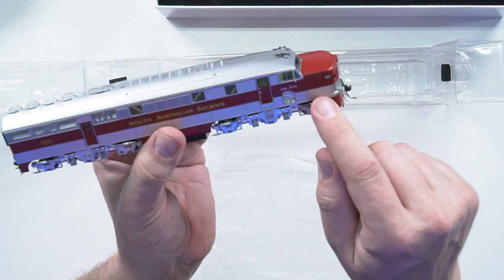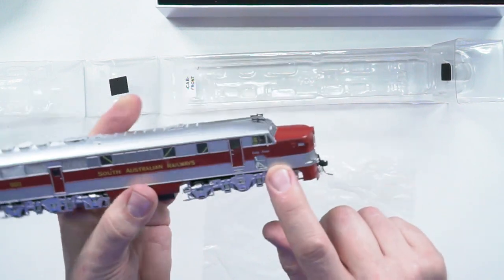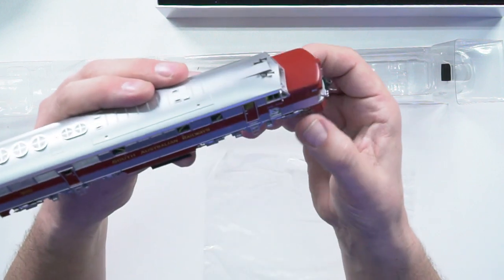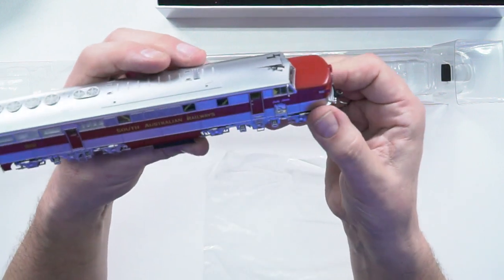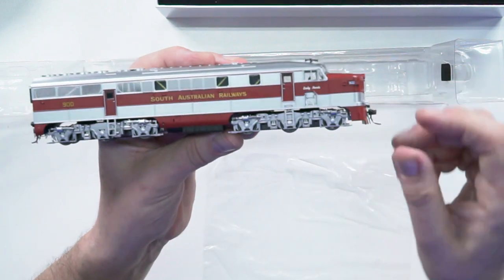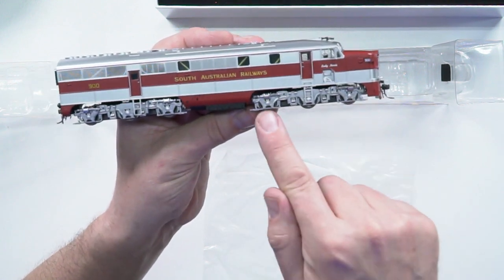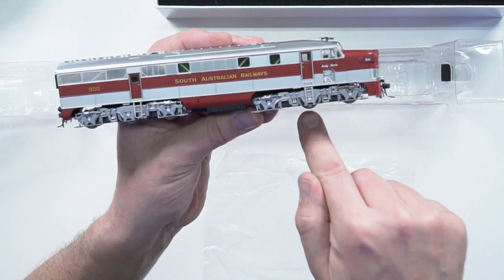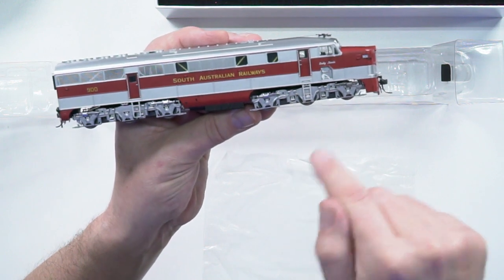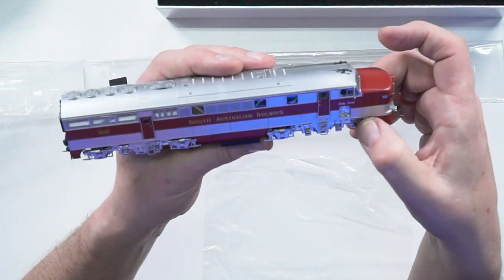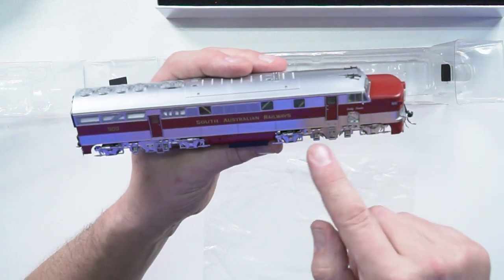We have big bulky bogeys. Now these bogeys were an A1A bogey, so anyone who's not familiar with that term, it means this axle drove, this axle drove, but the middle one was just a carrier axle, a dead axle, a non-powered axle.